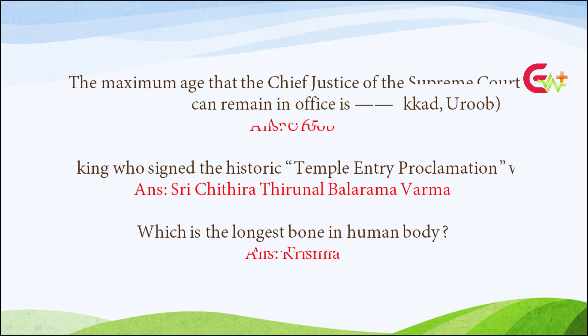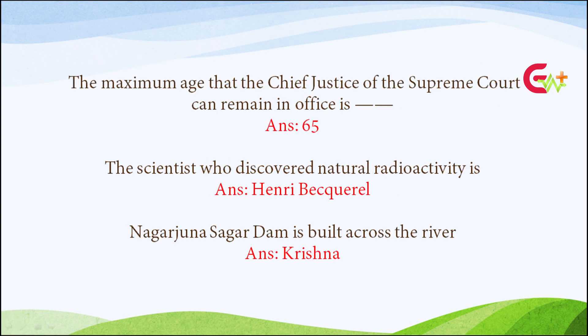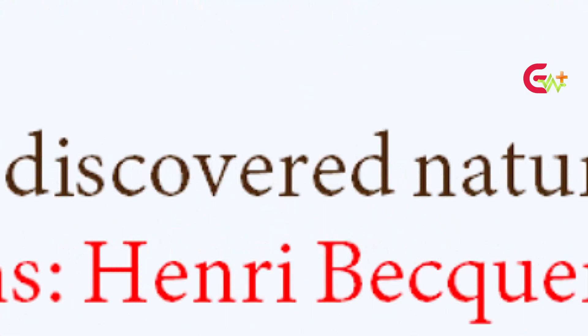The maximum age that the Chief Justice of the Supreme Court can remain in office is? Answer: 65. The scientist who discovered natural radioactivity is? Answer: Henry Becquerel. Nagarjuna Sagar Dam is built across the river? Answer: Krishna.